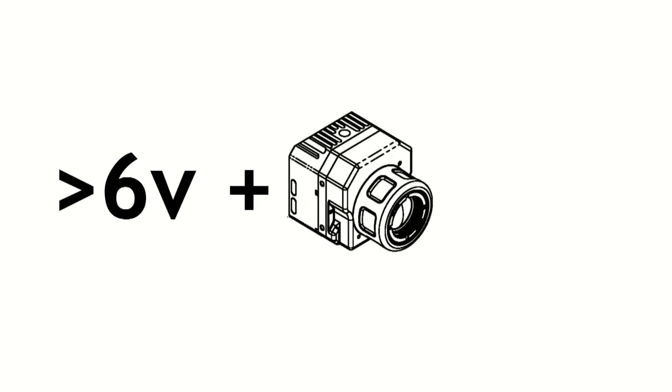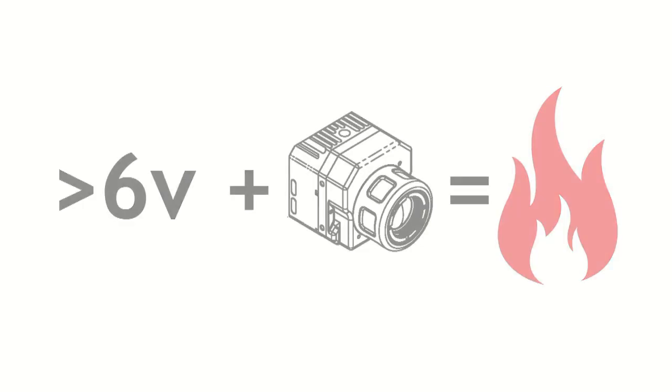One more crucial thing to be aware of with the FLIR VUE Pro is that it doesn't incorporate any over voltage protection. So if you put more than six volts into the camera, you're going to void your warranty and most likely set it on fire. So don't do that.